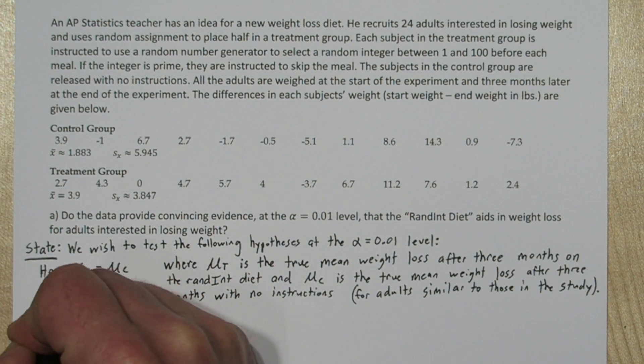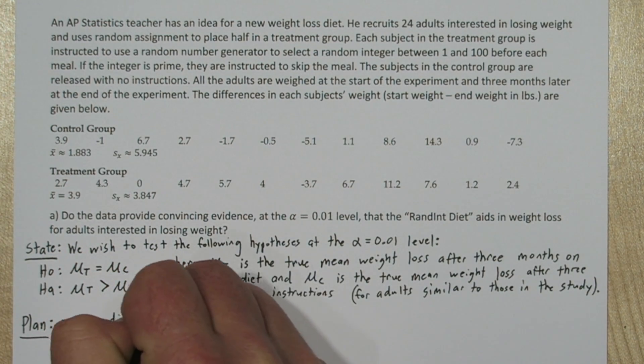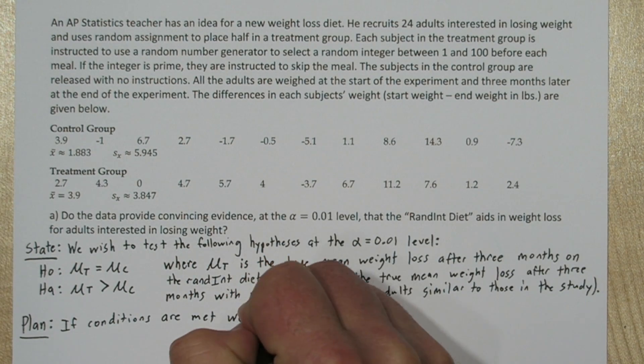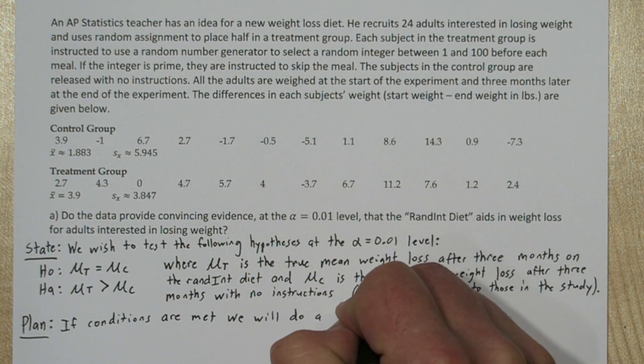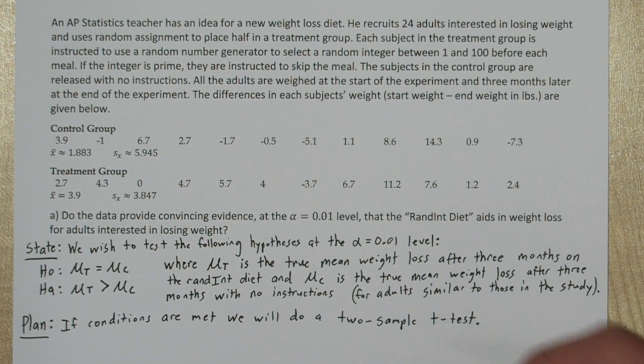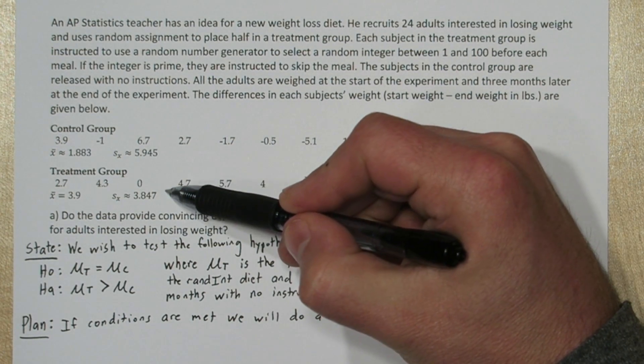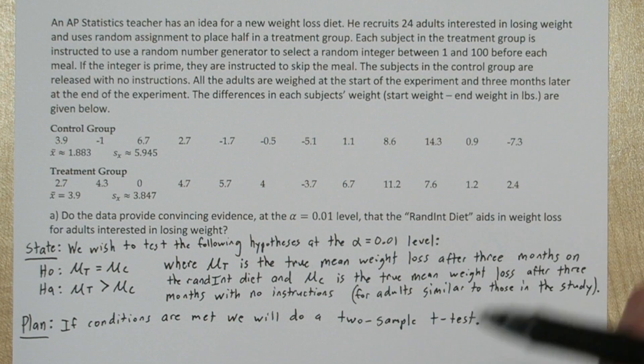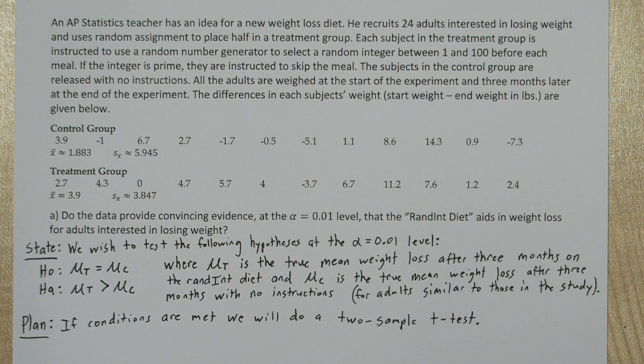Next we'll do our plan step. So if conditions are met, we'll do a two-sample t-test. We know we have to use a t-test here because we do not know the population standard deviations of these two groups. Now be careful, a lot of people confuse the sample standard deviation, s sub x, for the true population standard deviations, sigma.